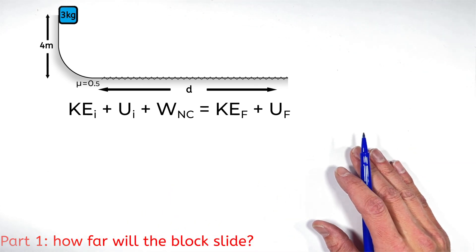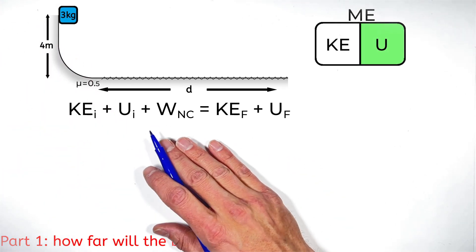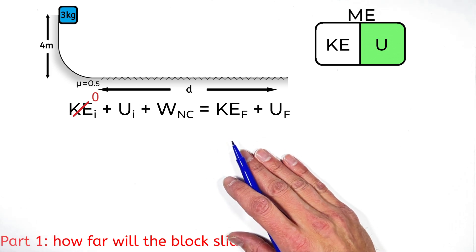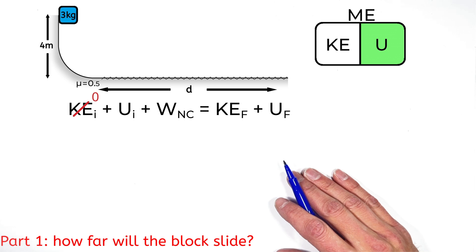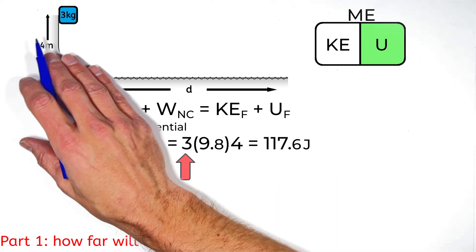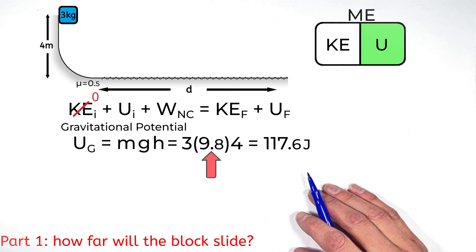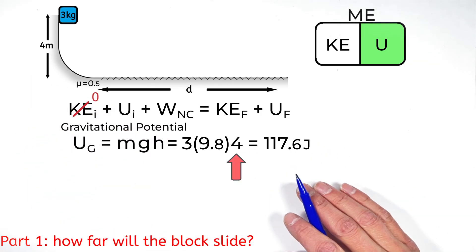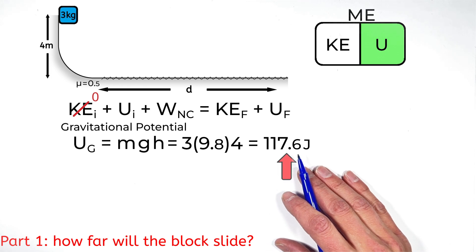In this problem, initially the block isn't moving, so there's no initial kinetic energy. It has some initial gravitational potential energy, and we can solve for that. Gravitational potential energy is given by MGH. So looking at the mass of our block — that's 3 kilograms — times 9.8, the acceleration due to gravity, times H, the height, which in this case is 4 meters, we can solve for the initial gravitational potential energy. That's 117.6 joules.